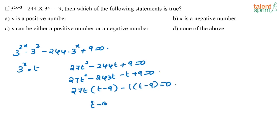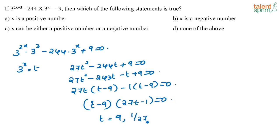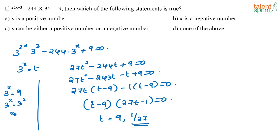So t minus 9 into 27t minus 1 equals 0, giving t equals 9 and t equals 1 by 27. Now, 3 to the power x equals t. If 3 to the power x is 9, then 3 to the power x equals 3 squared, so x equals 2. If 3 to the power x equals 1 by 27, then 3 to the power x equals 3 to the power minus 3, so x equals minus 3.